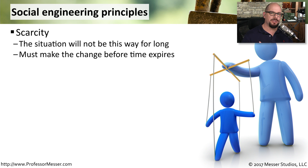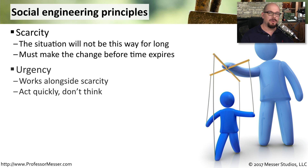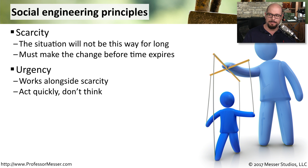Social engineers also like to have a clock that's ticking — there needs to be scarcity. This particular situation is only going to be this way for a certain amount of time, and the issue must be resolved before the timer expires. If the social engineer can inject urgency, they can make things move even faster: 'This needs to happen quickly. Don't even think about it. Just provide this information right now so that we can solve this problem.'